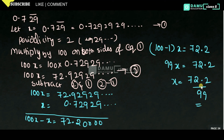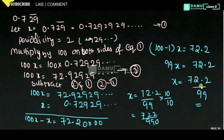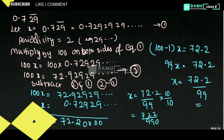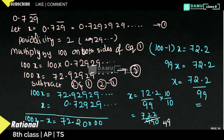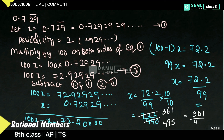In order to remove the decimal, multiply and divide with 10: 72.2 by 99 into 10 by 10 gives 722 by 990. Then, cancelling common factors by dividing both by 2, and further simplification through the division steps, what you will get is 361 by 495. That is our answer.